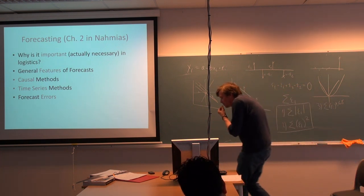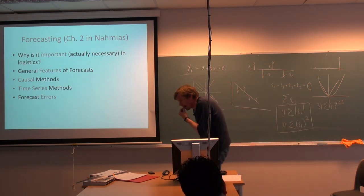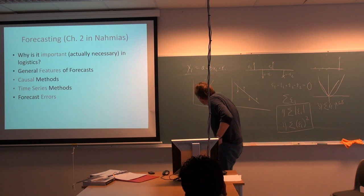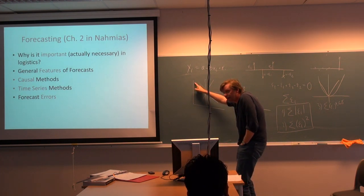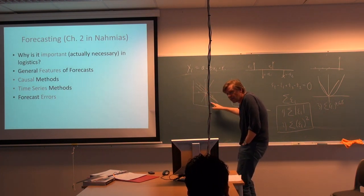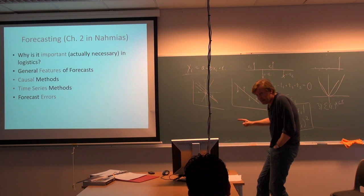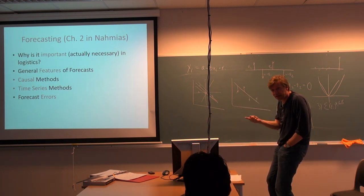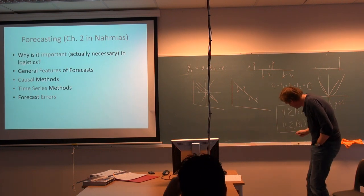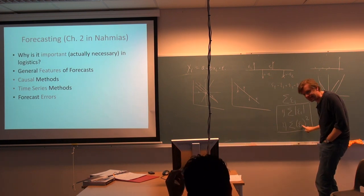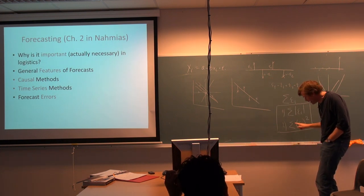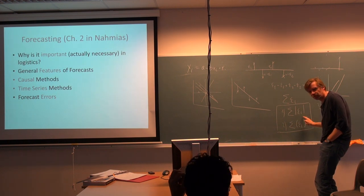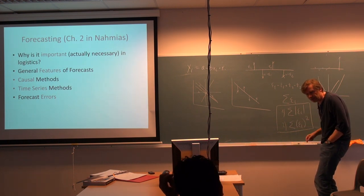Now we have the tools. We want to place our line such that the total aggregate error is as small as possible. The total aggregate error is defined as the sum of the squares of all errors. This is called the Total Squared Error, or TSE.